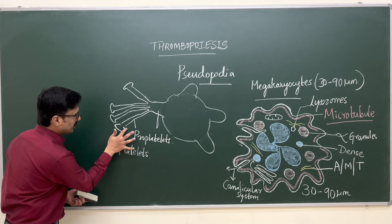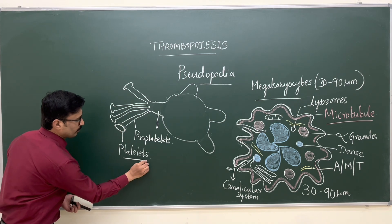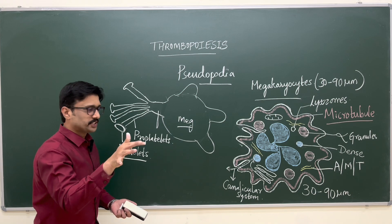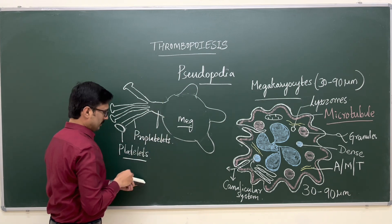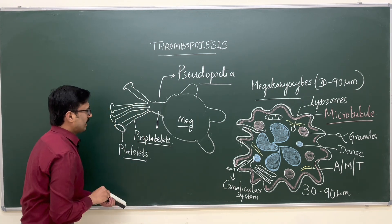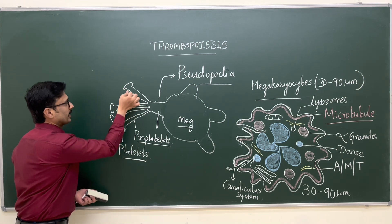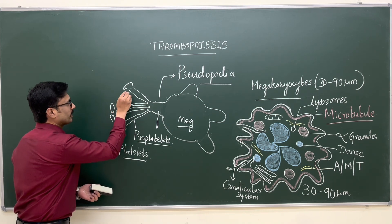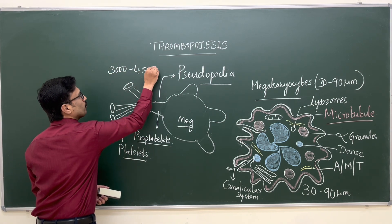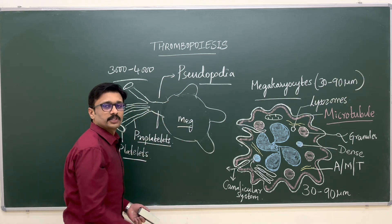When these disc-like tips get detached, a platelet is formed. So the megakaryocyte cell membrane evaginates, finger-like pseudopodia are formed, which elongate to form proplatelets, and the disc-like expansions at their tips detach to form platelets. Around 3,000 to 4,000 platelets are derived from one megakaryocyte. The elongation of proplatelets is driven by microtubules pushing the membrane outward.